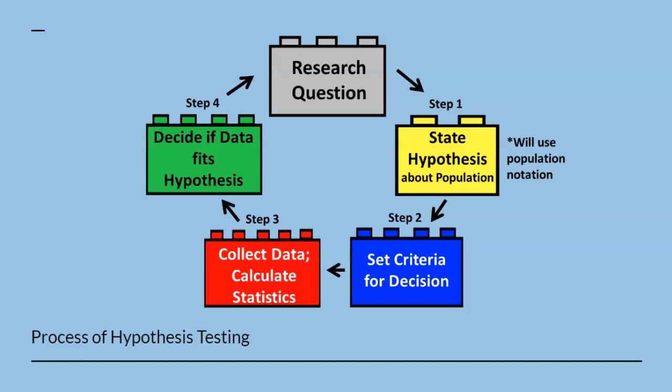This diagram illustrates the process of hypothesis testing. Research often starts with a question that we want answered. Step 1, the yellow Lego, involves stating hypothesis or prediction about the population. These hypothesis statements will use population notation, such as mu and sigma. Step 2, the blue Lego, is where we use the hypothesis to predict the characteristics that the sample should look like if the study worked. In other words, we set the criteria to decide if the study worked or not to make a decision at the end of the study.